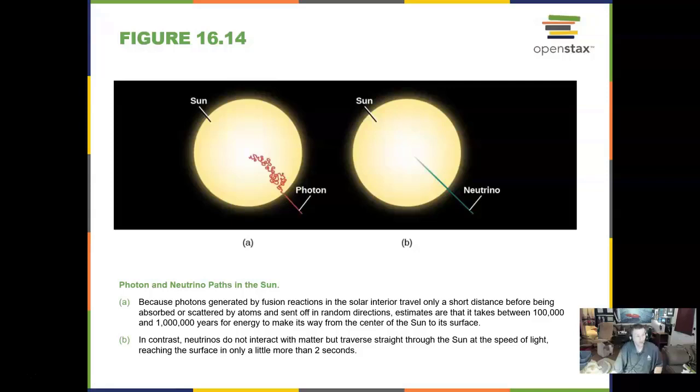Now a photon, a beam of light, will take all these paths to go through the Sun and bounce around. A neutrino, however, is neat. A neutrino will go right through the Sun, right through the Earth, right through your body, and you don't detect it. We have detectors in the Earth and they are large. These things go through us and we don't feel them.